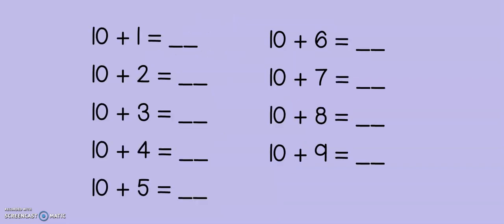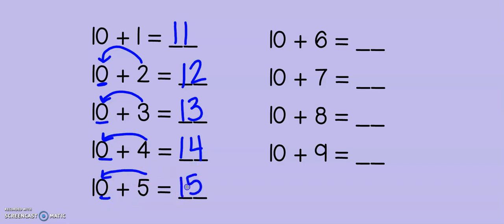Start our lesson by thinking of all of the equations that we can do very quickly by adding with the number 10. For instance, 10 plus 1 gives me 11. 10 plus 2, 12. All I'm doing is replacing the 0 with the new number in the 1's place. 10 plus 3 gives me 13. 10 plus 4, 14. This strategy is very quick and easy to add.